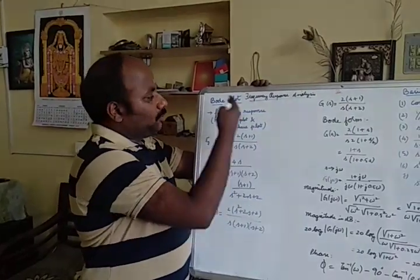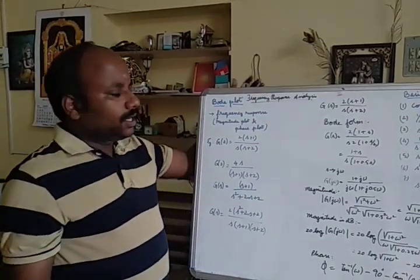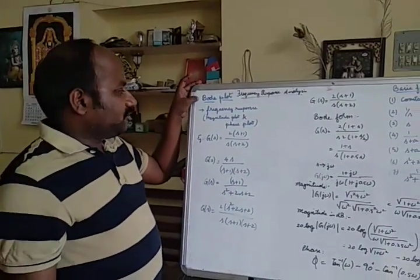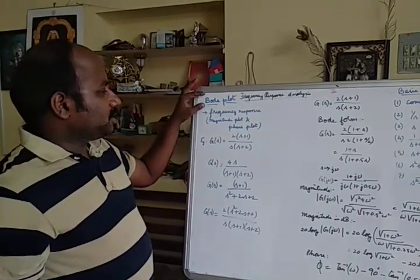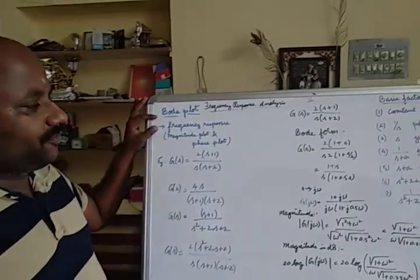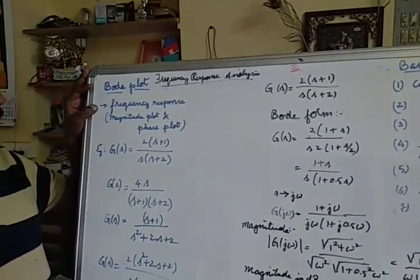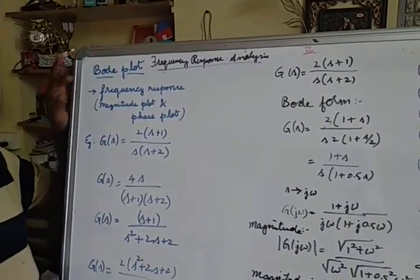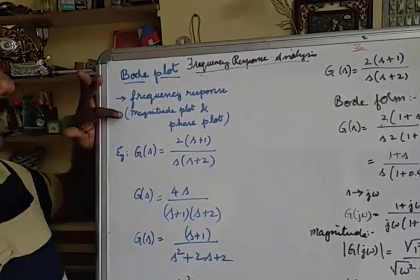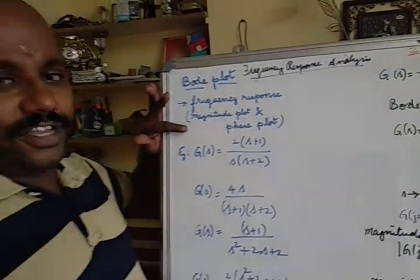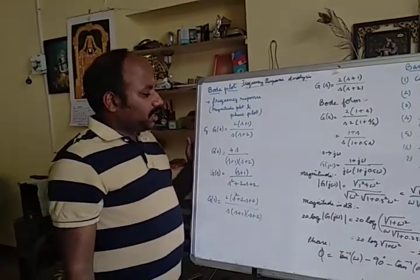Here we have some techniques: Bode plot, polar plot, and Nyquist plot. First we start with the Bode plot. What is a Bode plot? It is nothing but a way to find the frequency response. We already know what the frequency response is — it is the magnitude plot and phase plot. Together it is called the frequency response.